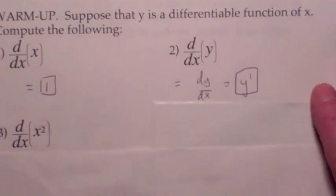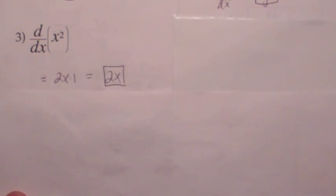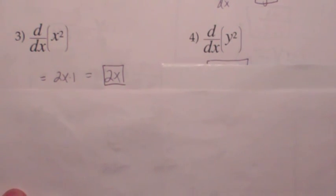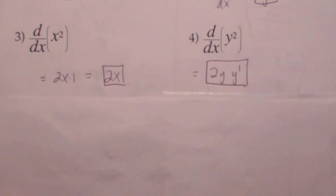What is the derivative of x² with respect to x? It's going to be 2x times the derivative of what's inside, so 2x times 1, which is 2x. What's the derivative of y² with respect to x? It's going to be 2y times the derivative of what's inside with respect to x, which gives you 2y times y-prime.